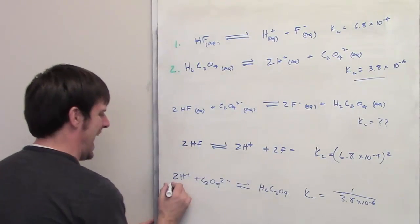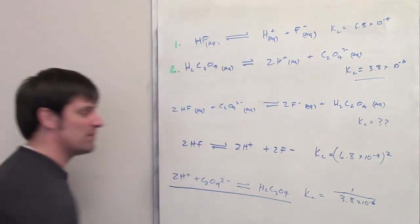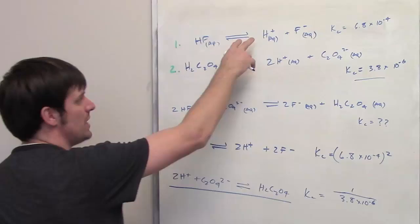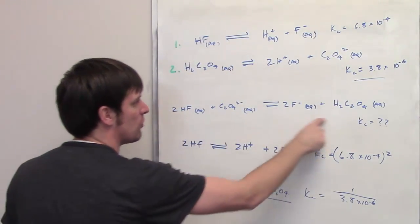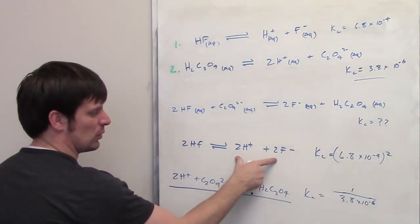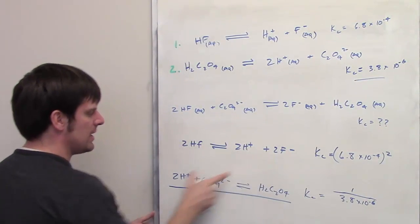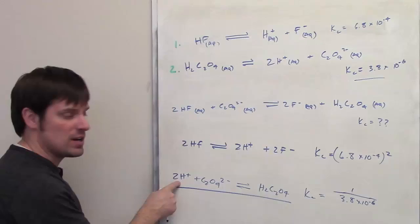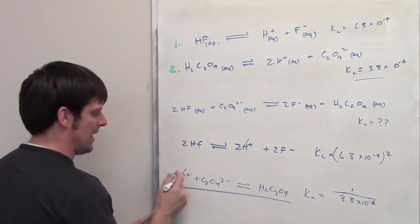Now what I'm going to do is I'm going to add up these two equations, and if I've done everything correctly, they should add up to give me this overall target equation I'm trying to get to. You'll note that I've got two H pluses on the right side of the equation over here, and two H pluses on the left side of the equation down here. Those cancel each other out algebraically.